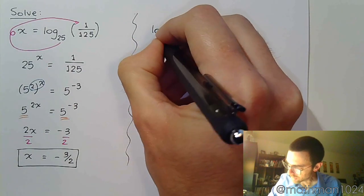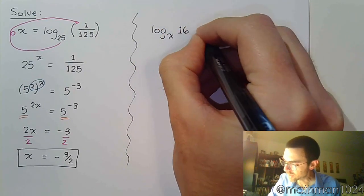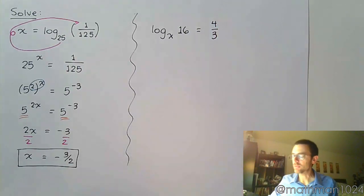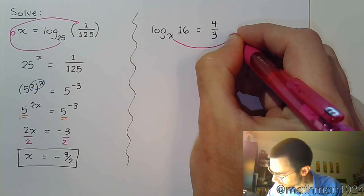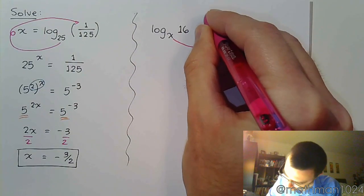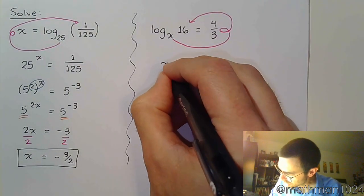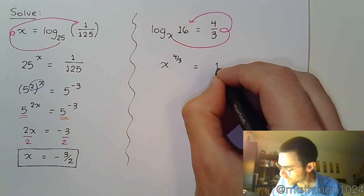Let's take log base x of 16 equals 4 thirds. You know that's going to be fun. Right away, we see that x is in a weird spot because it's as the base. So let's fly the plane and rewrite this as something that's exponential. It's going to be x raised to this power, so x to the 4 thirds equals 16.